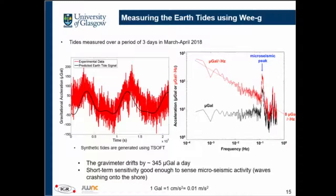Our sensor drifts by about 340 to 345 nanogal per day. The CG5 commercial gravimeter I showed earlier gives 500 microgal per day, so we are slightly better than that.